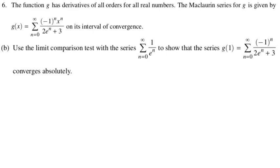Use the limit comparison test with the series, the sum from zero to infinity of 1 over e to the n. That's the one we just dealt with to show that the series g of 1, so you're plugging 1 into g of x. Alright, I guess it kind of has something to do with it, which is from zero to infinity of negative 1 to the n, blah, blah, blah. Convergence absolutely. Alright, so convergence absolutely is a pretty easy concept. It basically means get rid of anything that alternates. So I'm just going to do the limit as n approaches infinity of the absolute value of the nth term of that crazy-looking thing. So it's the absolute value of negative 1 to the n over 2 e to the n plus 3. So that's a sub n, and then b sub n is going to be 1 over e to the n.